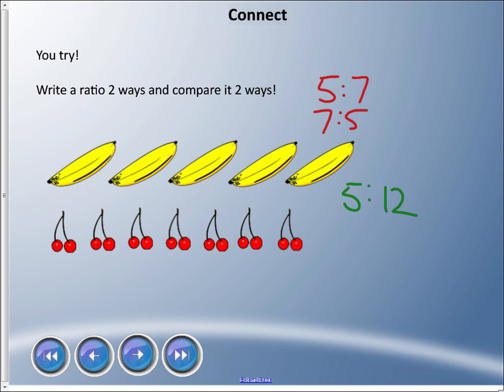Remember, we can write part-to-whole ratios as fractions. So I could say 5:12 equals 5/12, and 7:12 equals 7/12.